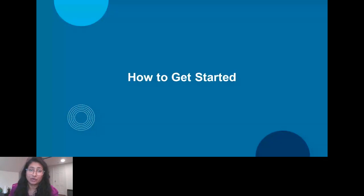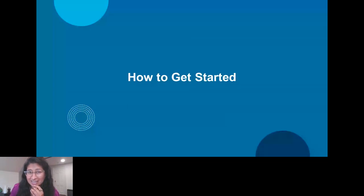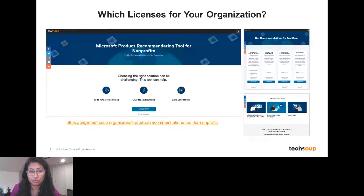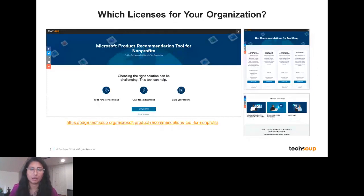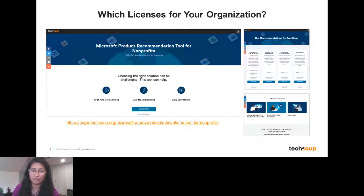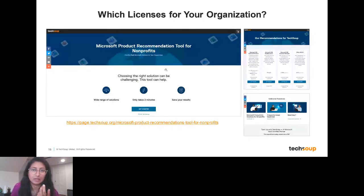To help you navigate which licenses to request, we have a Microsoft product recommendation tool on TechSoup where you can answer five or six questions about your organization and how you use the licenses, and we'll provide a recommendation on the best license mix for your organization. It's free. I also want to remind everyone that there is a utilization requirement for anything you're getting as a donation from Microsoft — including the Business Basic license, E1 or E2 licenses, or the 10 free Business Premium licenses. Microsoft requires that if you're receiving a free donation on cloud subscriptions, you have to be using those products at an 85% rate.